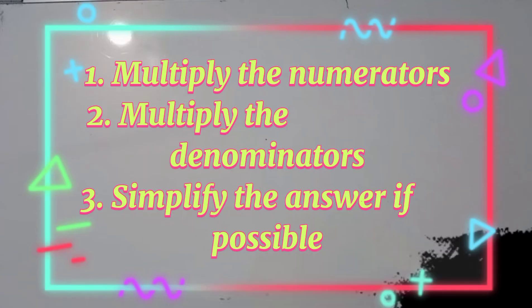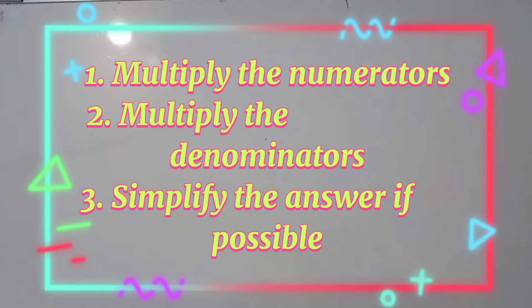First, multiply the numerators. Second, you are going to multiply the denominators. And the last step, you are just going to simplify the answer if possible.